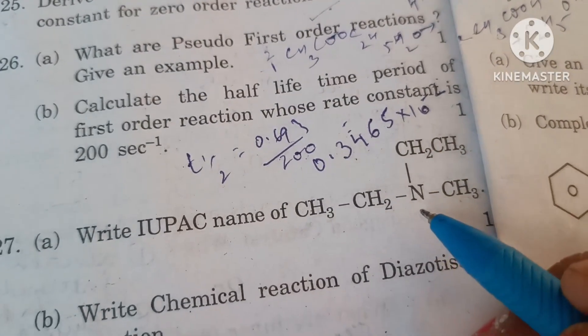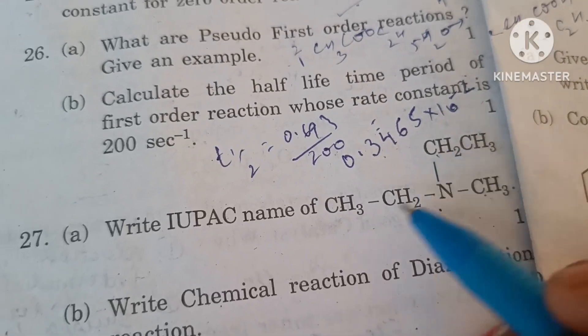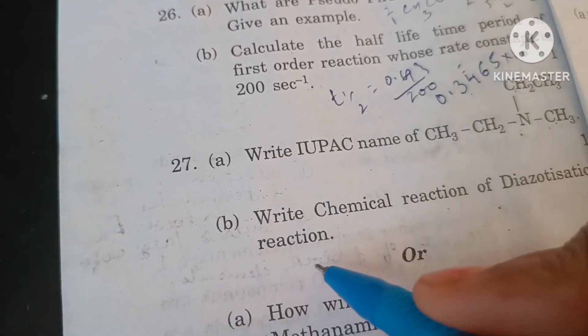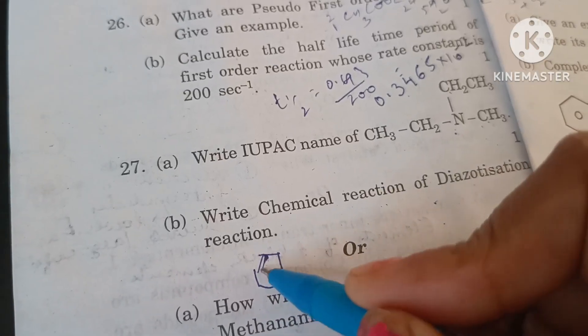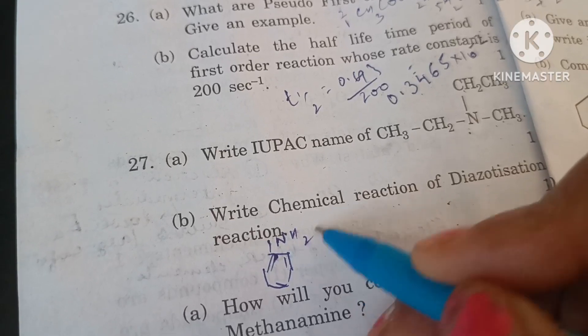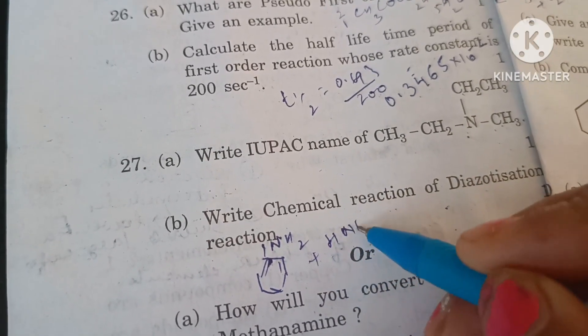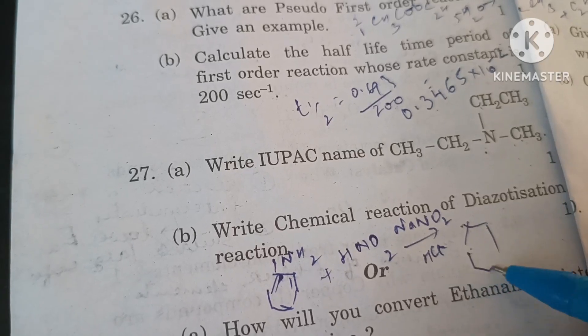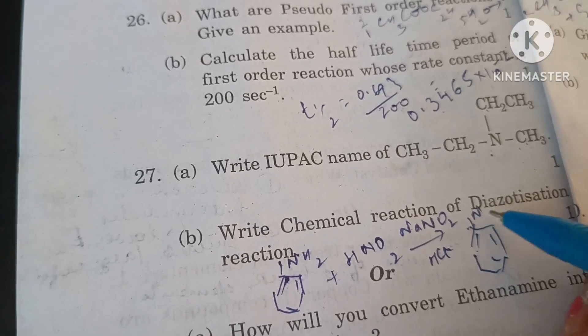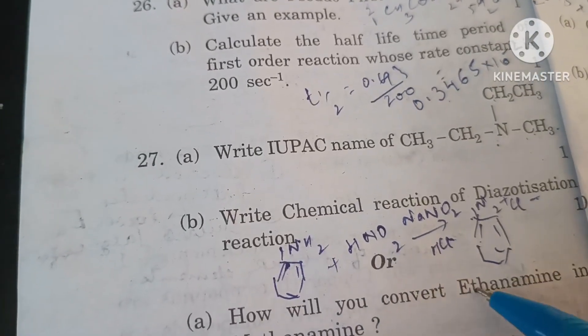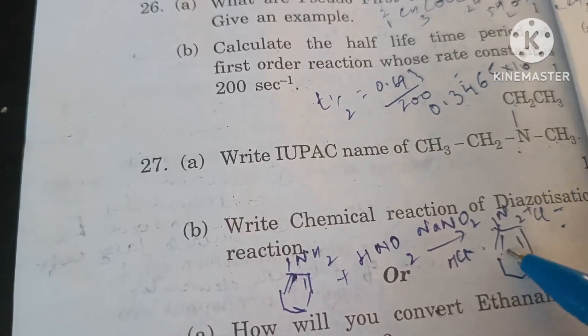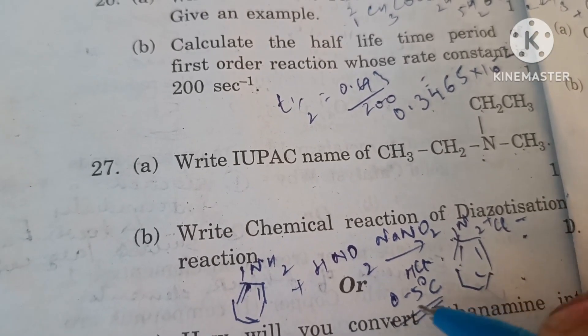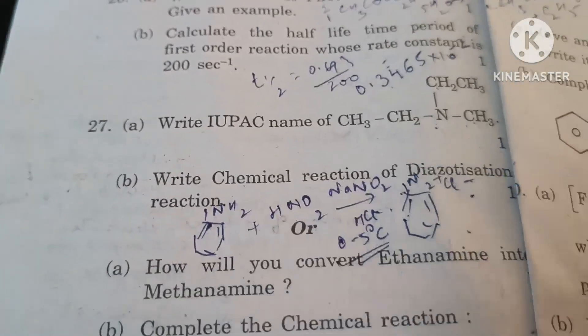Write IUPAC name: this is N-methyl-N-ethyl ethaneamine. Write chemical reaction of diazotization reaction. When aniline is made to react with nitrous acid which is formed in situ in the presence of NaNO₂ and HCl, benzene diazonium chloride is formed, N₂⁺Cl⁻. This reaction of formation of benzene diazonium chloride is called diazotization reaction. It always takes place at ice cold conditions, 0 to 5 degrees Celsius or 273 to 278 Kelvin temperature.